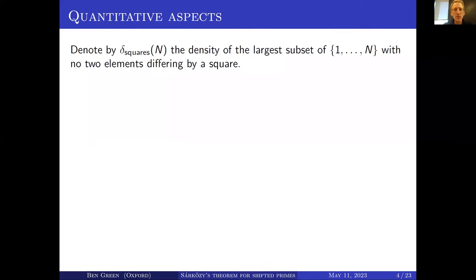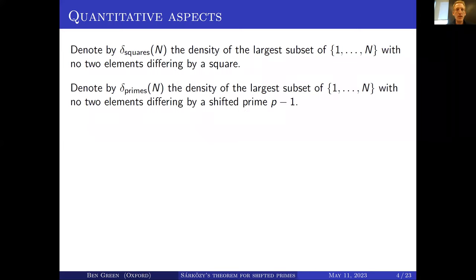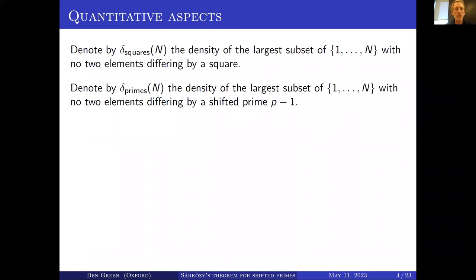To get quantitative, let's denote by delta_squares(n) the density of the largest subset of {1,...,n} which doesn't have two elements differing by a shifted prime p minus 1.